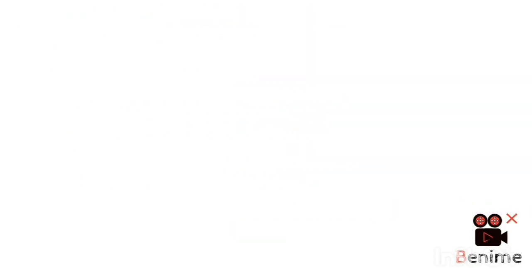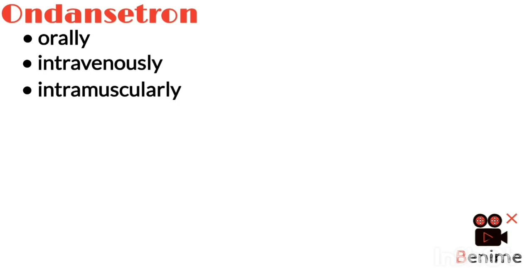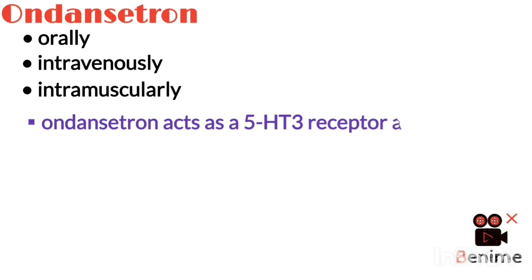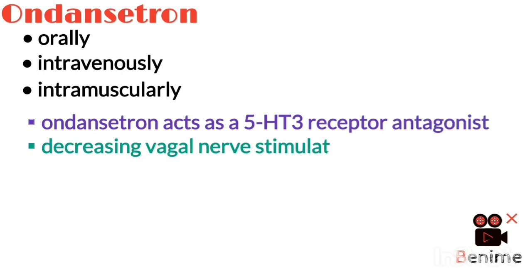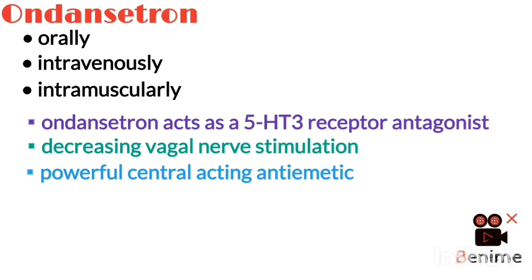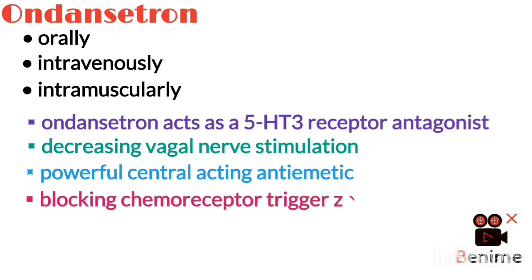Now let us start with ondansetron in detail, which can be administered orally, intravenously and intramuscularly. Once administered, ondansetron acts as a 5-HT3 receptor antagonist peripherally by decreasing vagal nerve stimulation, but it is also a very powerful central acting antiemetic, blocking an area in the brain called the chemoreceptor trigger zone.